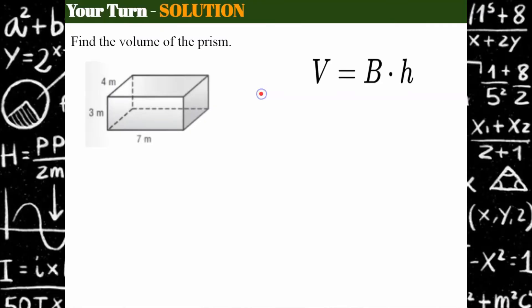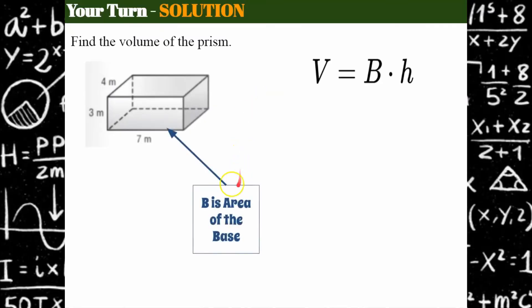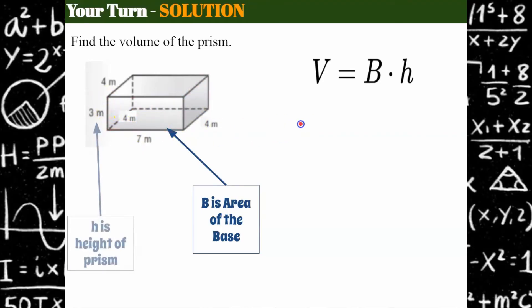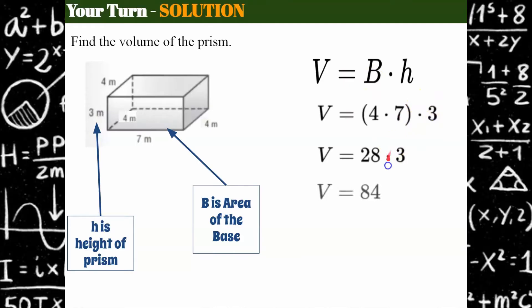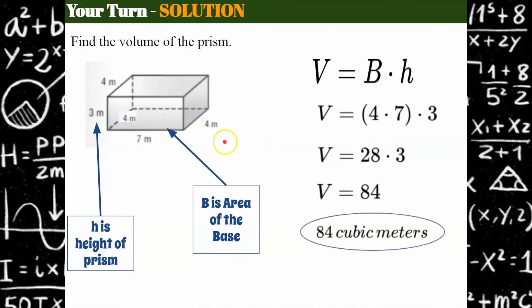Welcome back. The volume here — we identify the base, and right here this is going to be key — we identify that this side is 4, and these sides are all 4. So my base here is 4 by 7 and the height of my prism is 3. We plug in the area of the base — this uppercase B means the area of the base of the prism — times the height of the prism, and we get 84 cubic meters.